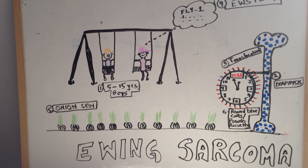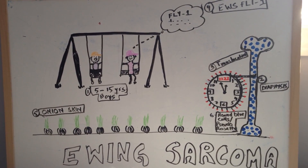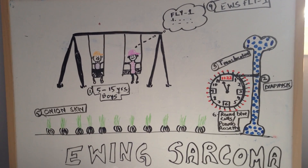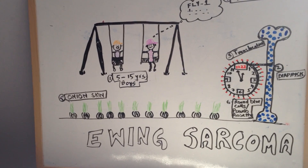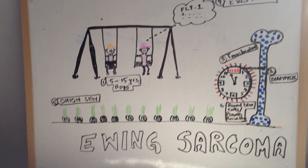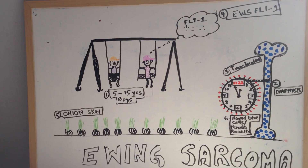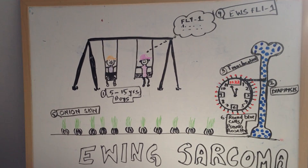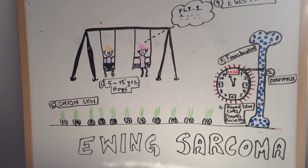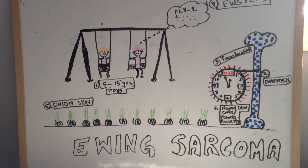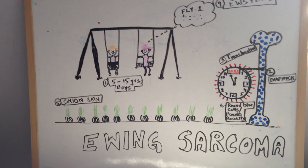Ewing's sarcoma is a very aggressive tumor that mostly presents with metastasis. However, it is responsive to chemotherapy — with surgery, chemo, and radiation, the five-year survival rate is 75%, which is quite good.